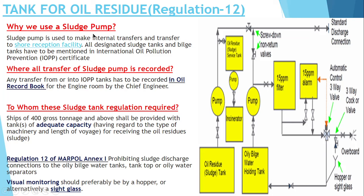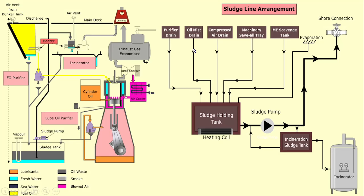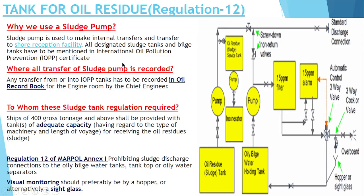We use a sludge pump in order to make the internal transfer and to transfer it to the shore reception facility. Where is all the transfer of the sludge pump recorded? These are all recorded in an ORB (Oil Record Book), known as IOPP. Basically, all the sludge tanks have been given a name as per the IOPP nomenclature — like purifier drain tank, oil mist drain tank, fuel oil drain tank, lube oil sludge tank, fuel oil sludge tank. They are recorded in the ORB, and whatever transfer you are doing with the sludge pump, you have to record it in the ORB, which will be done by the chief engineer.